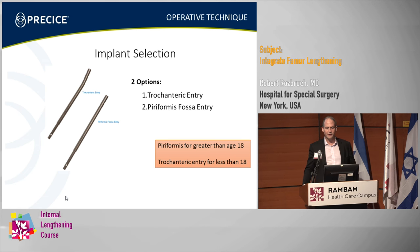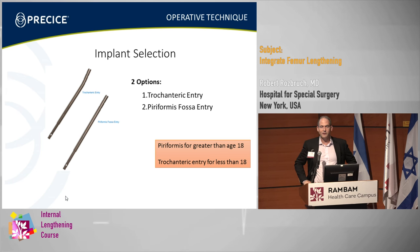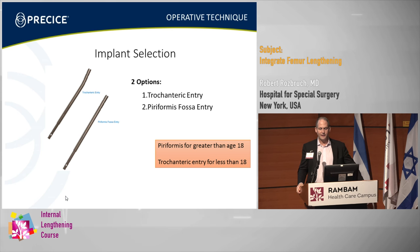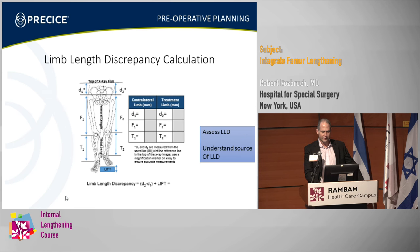I prefer using the piriformis — it's a little harder in terms of entry, but getting the nail in is easier and then it's straight, and you can rotate around the nail nicely. I use 18 as a cutoff point because it gives me a little extra buffer with the idea of skeletal maturity.